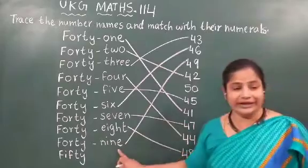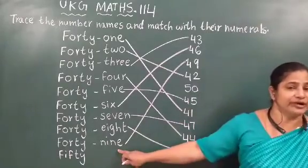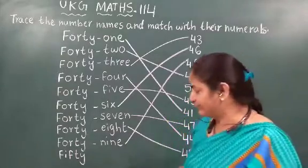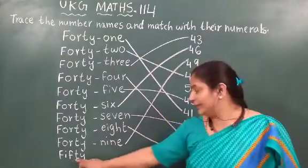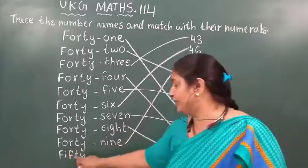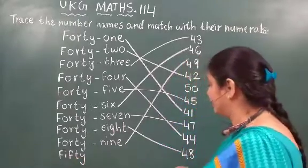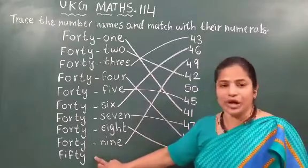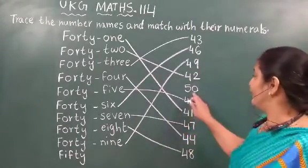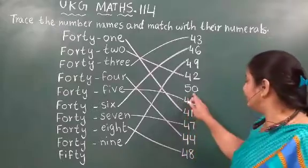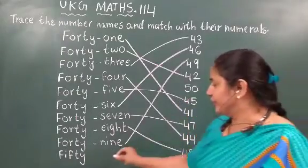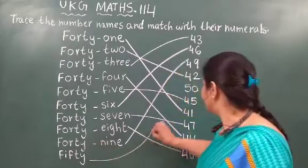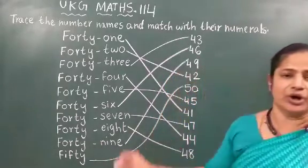Now after 49, which number will come? 50. The spelling of 50: F-I-F-T-Y, 50. Now this is the number name. Now you have to find out the numerals of 50 — it is already written here. Now you can match the number name 50 with the numerals of 50.